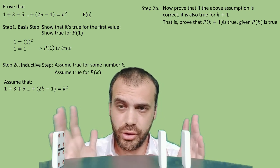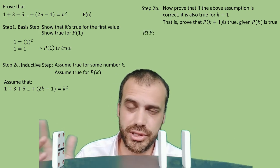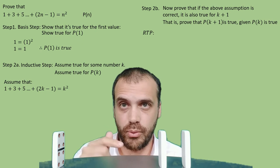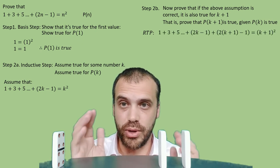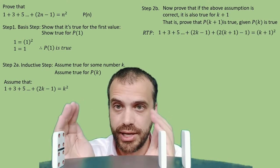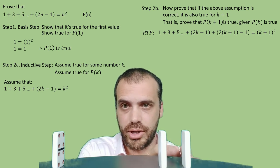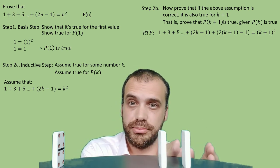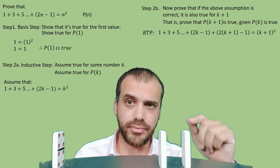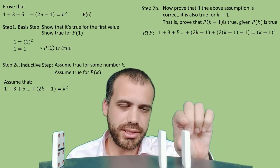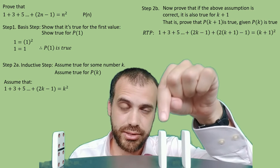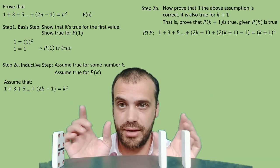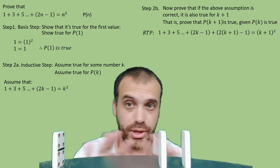In my formula I'll write RTP, which stands for 'required to prove.' It's required to prove that 1 plus 3 plus 5 plus ... plus 2k minus 1, plus 2k plus 1 minus 1, equals k plus 1 squared. That first part covers all the terms up to k, and we're adding the next term. We're substituting k plus 1 into our formula and need to prove that equation is true — we don't know it yet, we need to prove it.